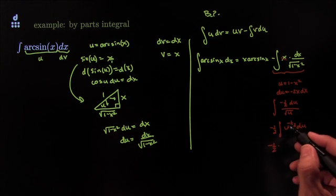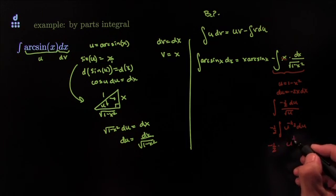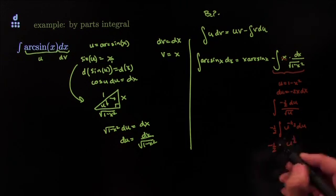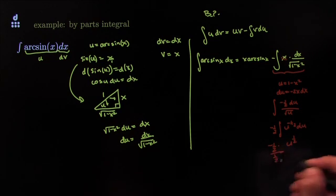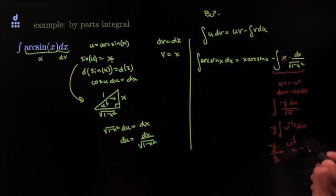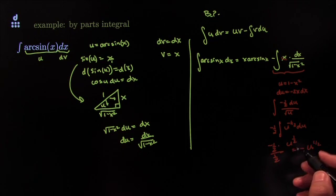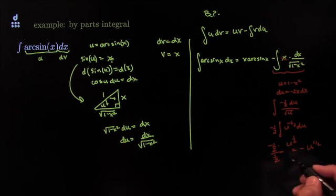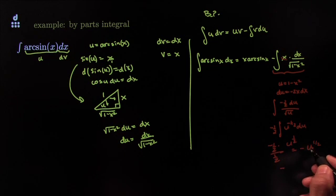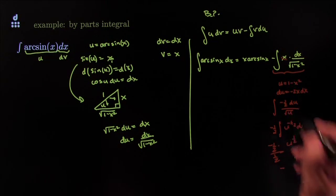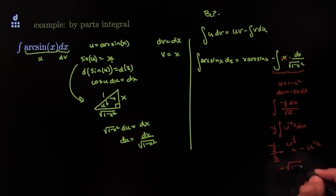Which would be negative 1 half. Now I would add 1 to the exponent, I would force it to be 1 half, divide by the new exponent, which would be 1 half. Altogether, I'd have negative u to the 1 half. Or, said differently, I would have negative u, which is this one, to the 1 half, which would be the square root of 1 minus x squared.